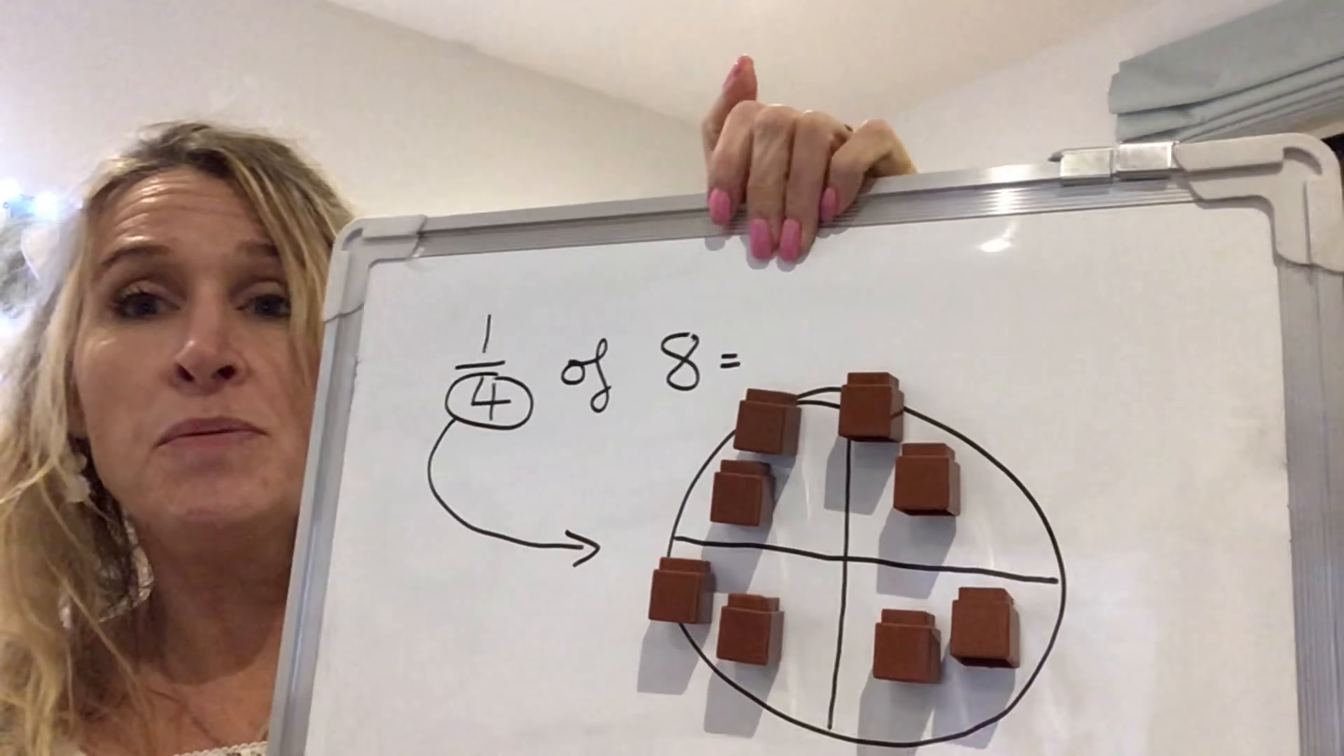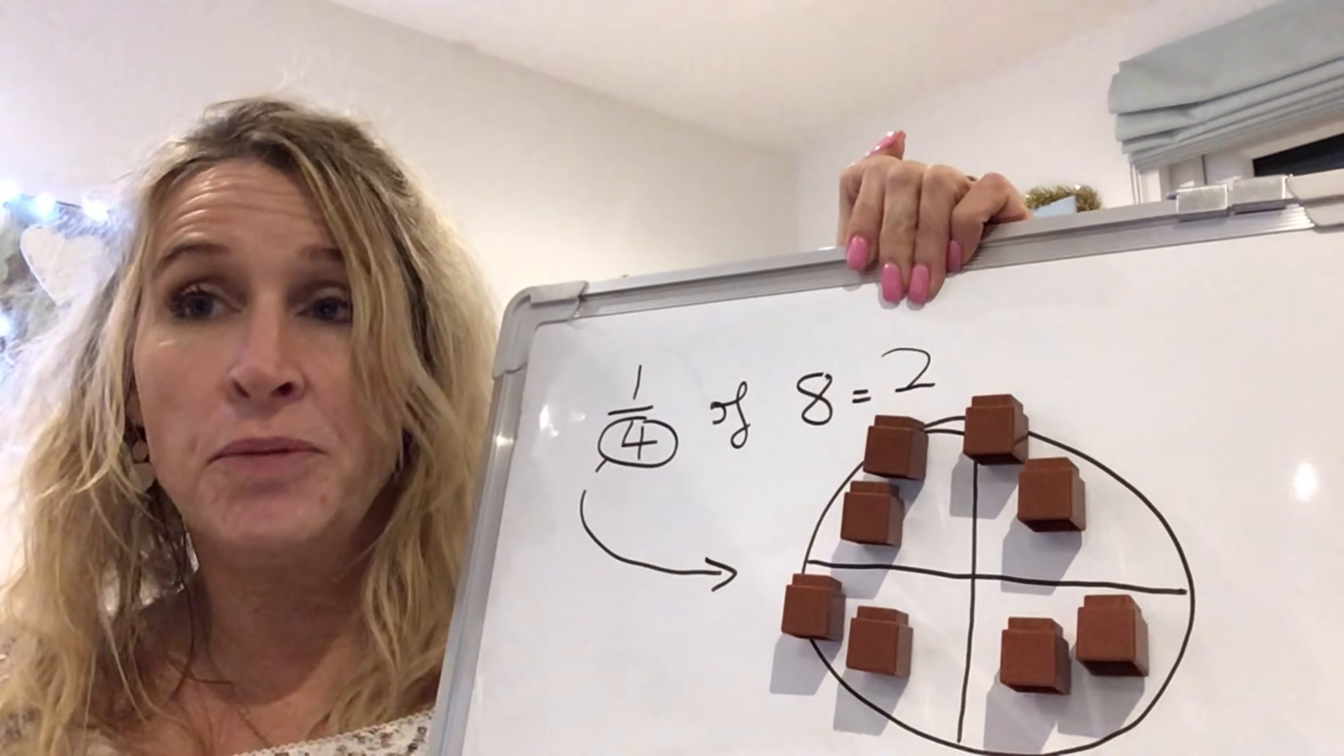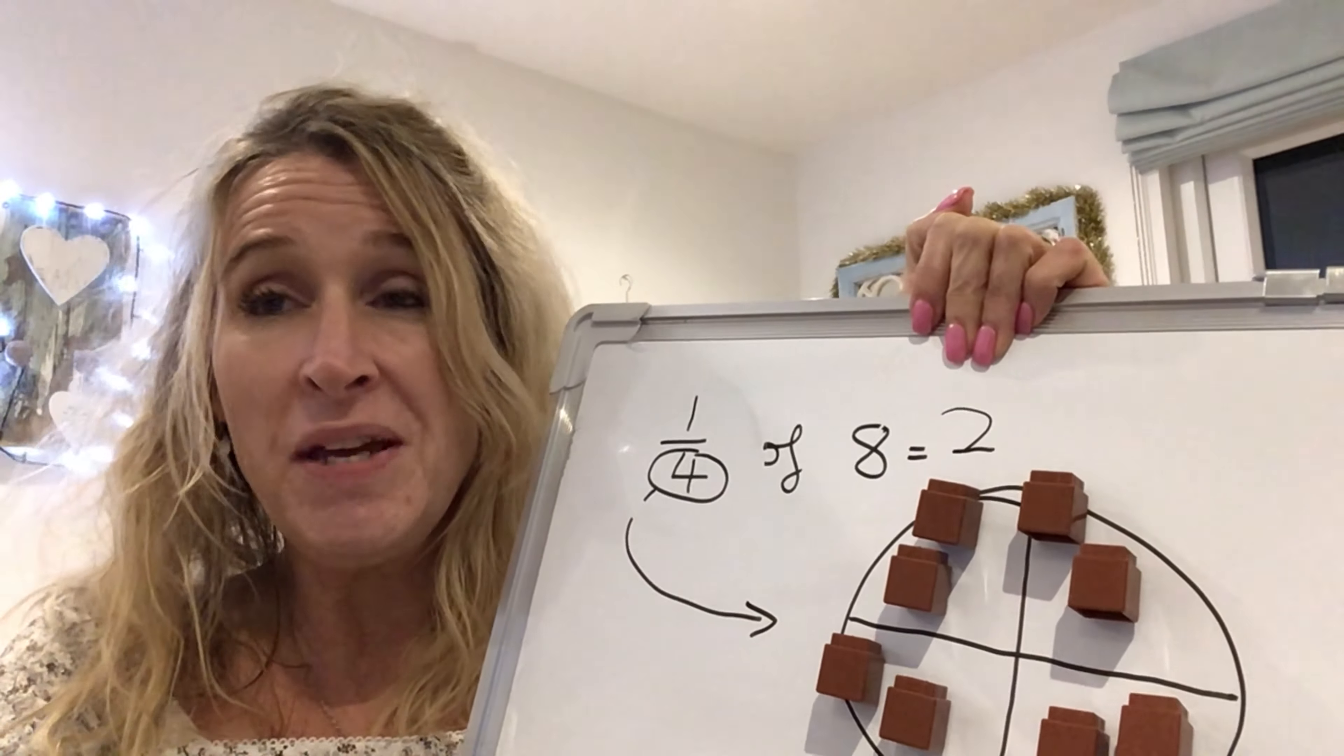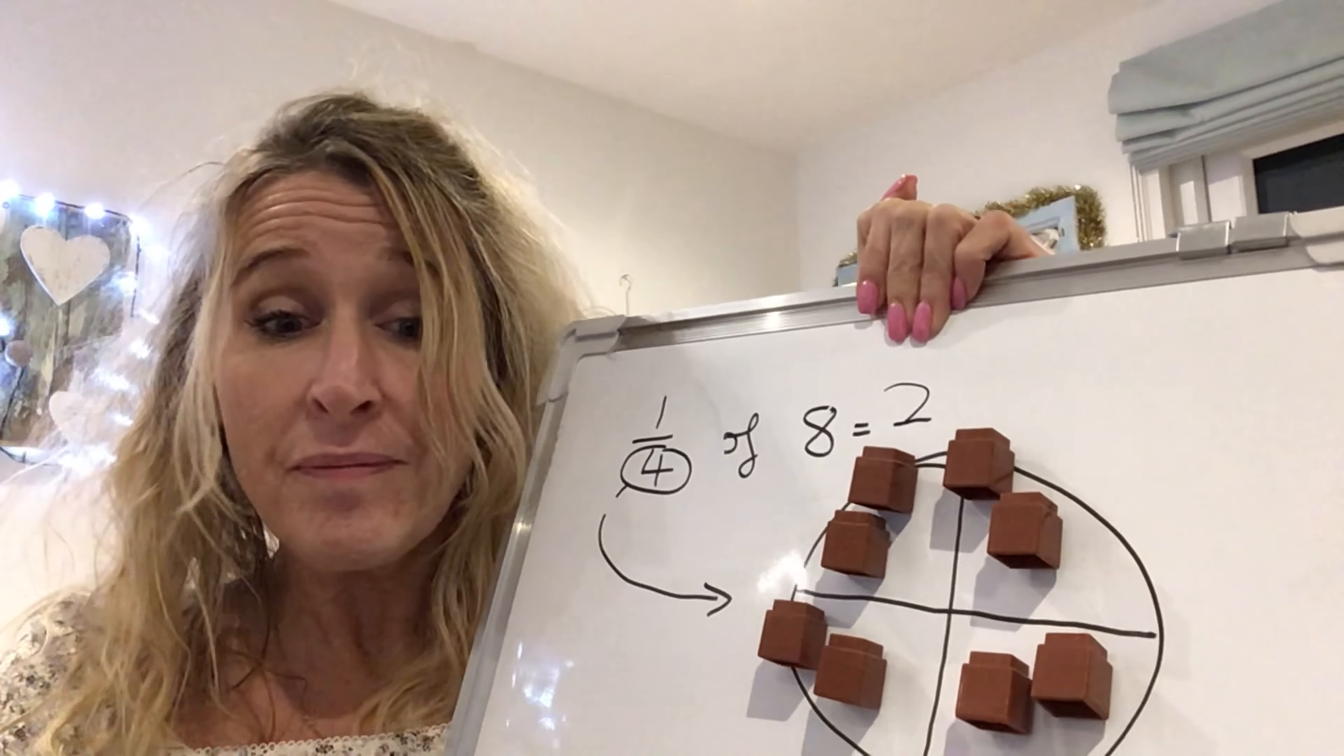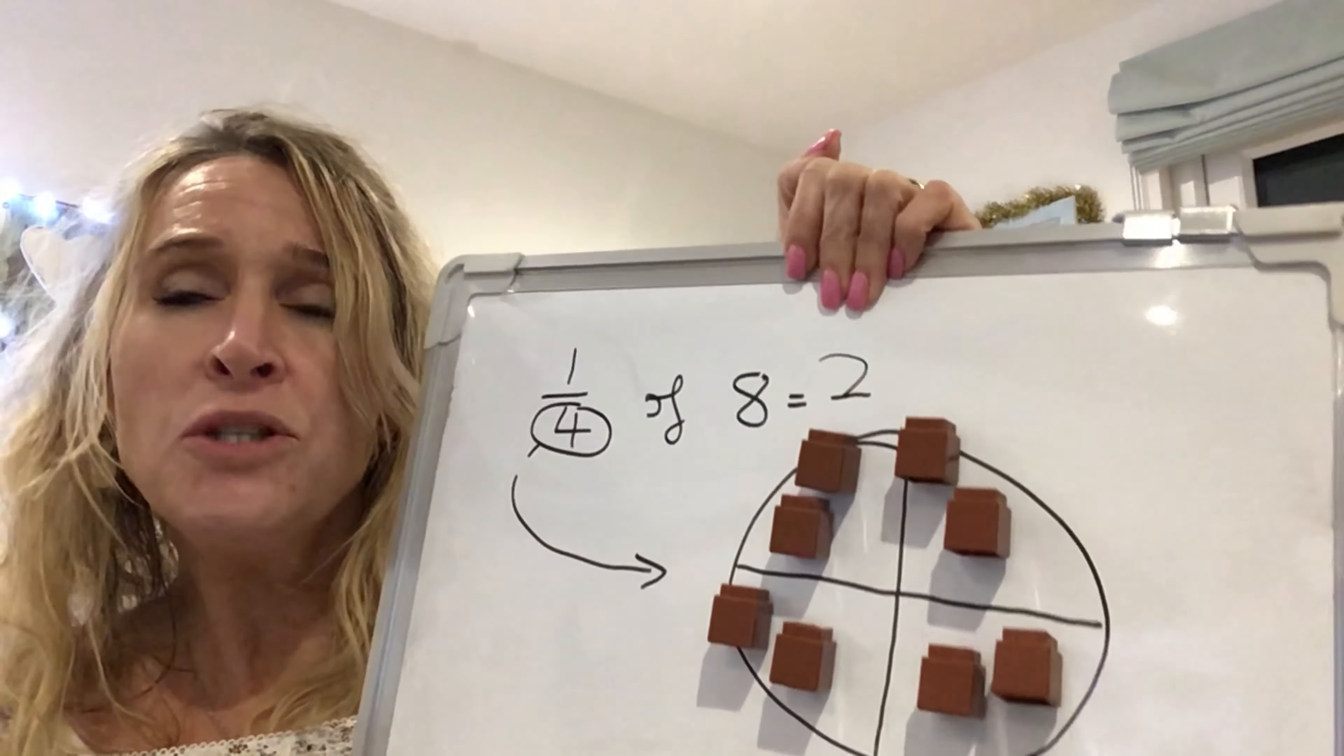So then once we've done that, we would look and say, well, how many are on each quarter? How many is on one quarter of the cake? We can see that there are two. So the children are using practical objects to work out what a fraction of eight is. And again, you could use a pizza base at home. You could use a cake with smarties, with eight smarties. You could use a piece of toast and you could put, I don't know, a different lump of cheese. You could have eight lumps of cheese and share them out onto each quarter. But you're trying to find out what is one quarter of eight.